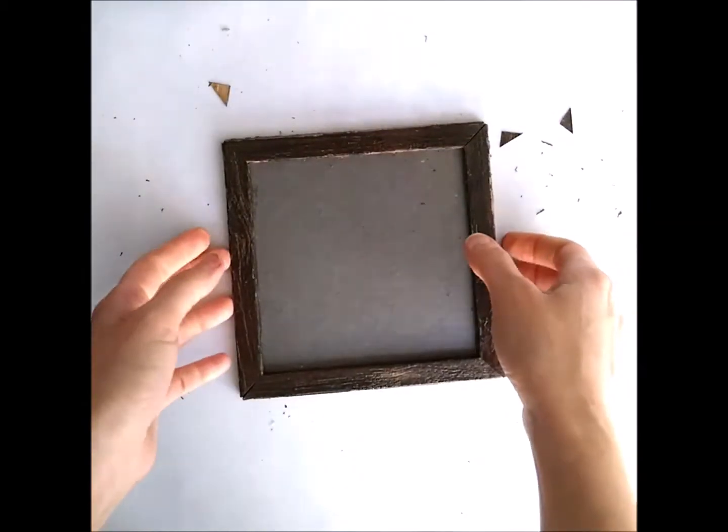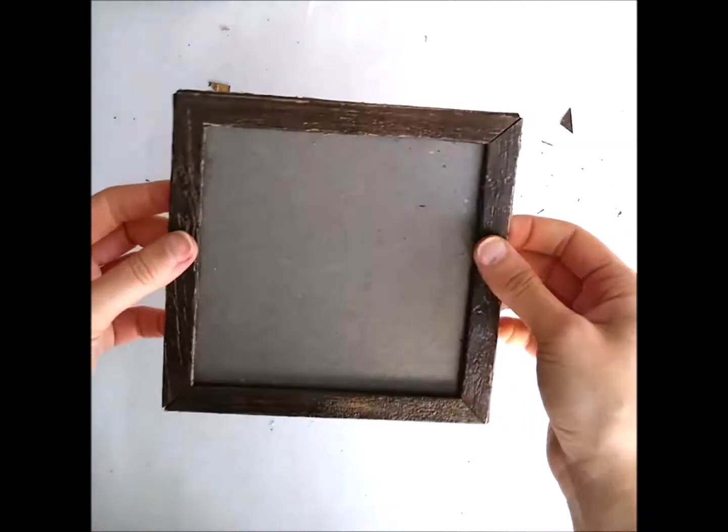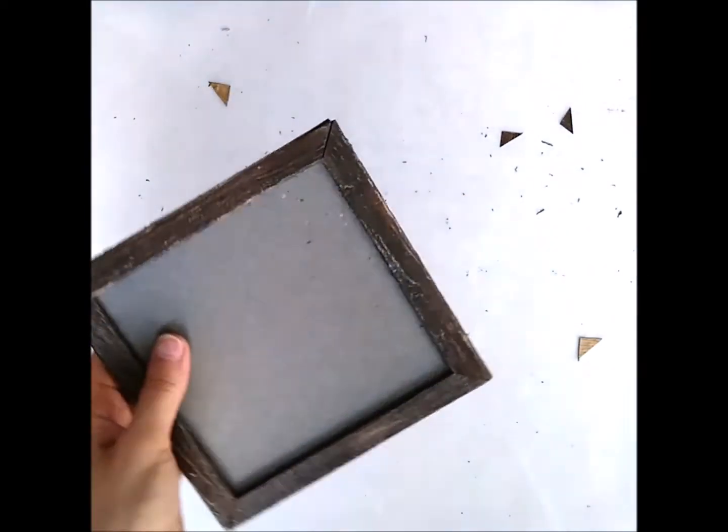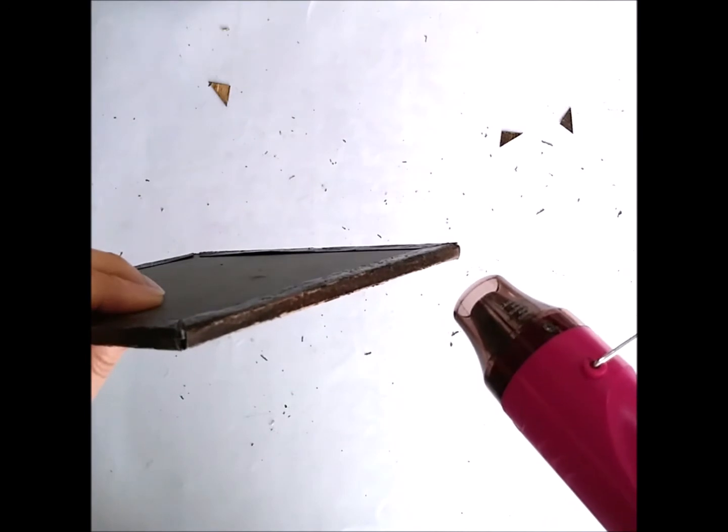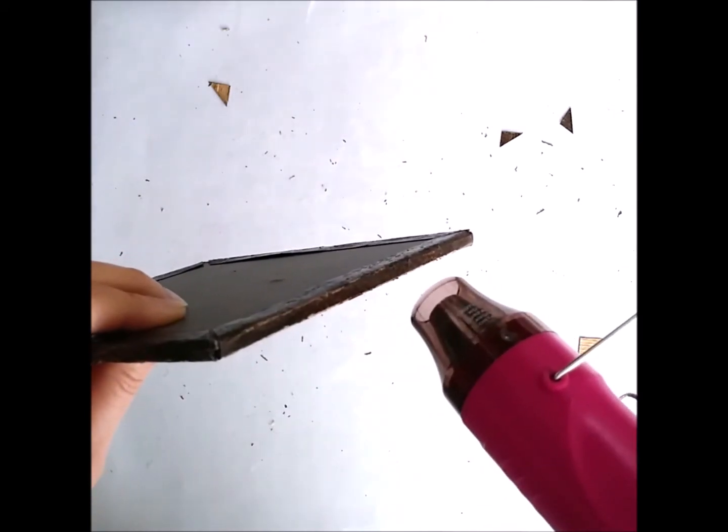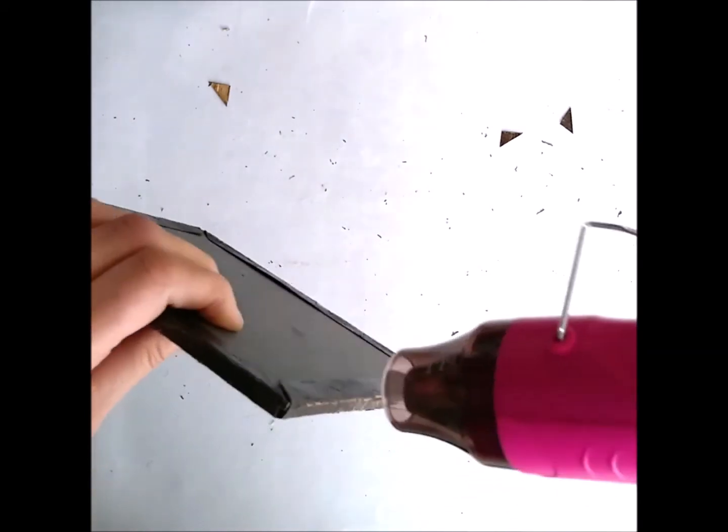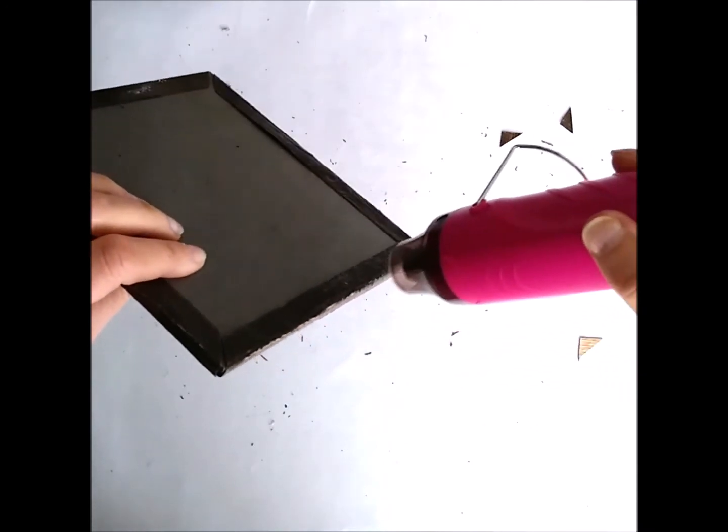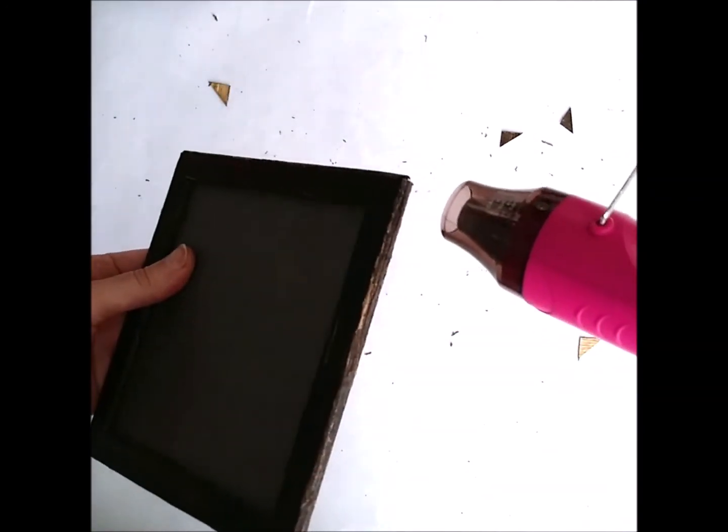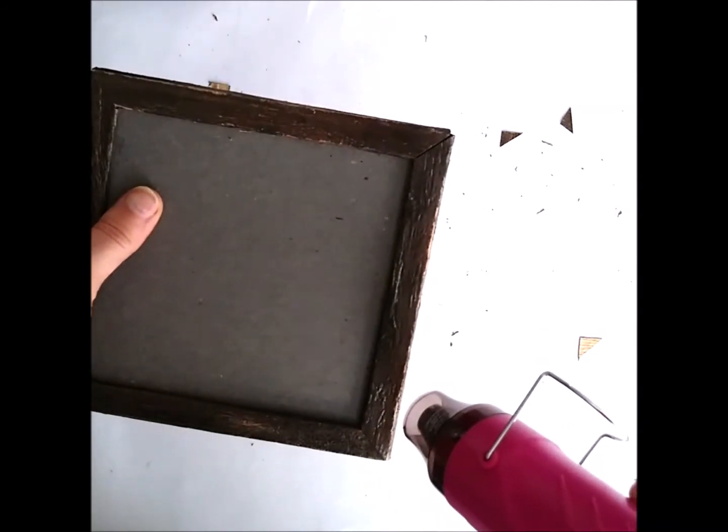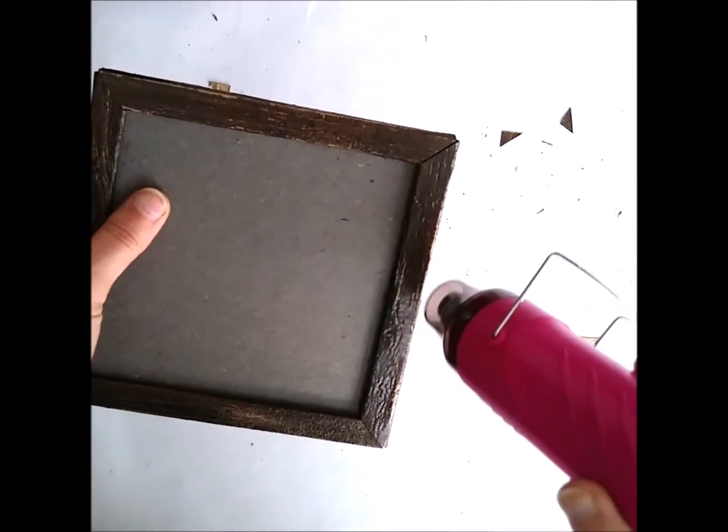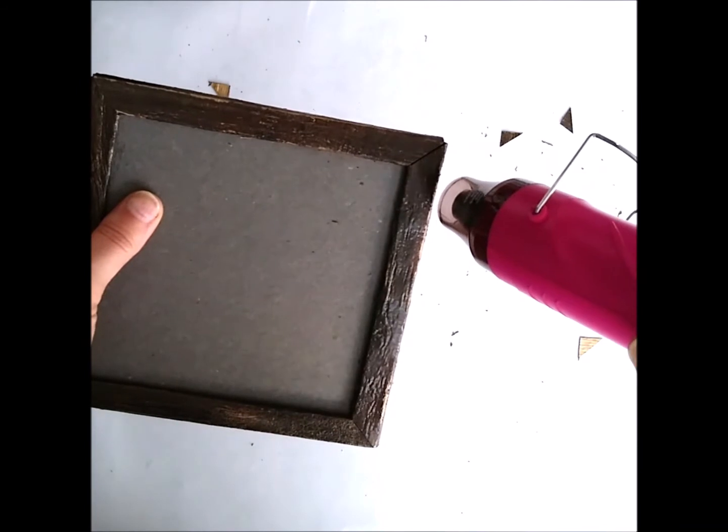And now we're going to fix the flaking issues that we had. And what we'll do is use a heat gun. Because glazes are basically plastic, if we heat them, they will melt again, but this time they will be molded around the shape that we created, the shape of the frame.